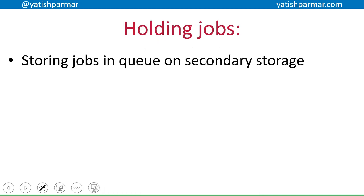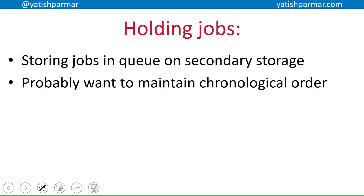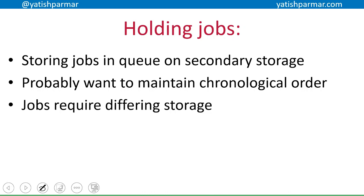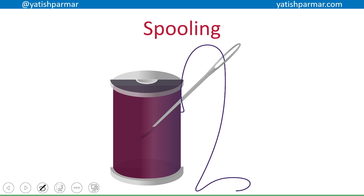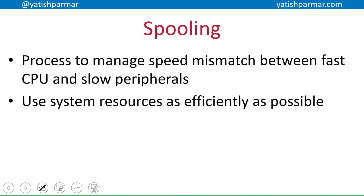All the jobs that can potentially get done but aren't getting done right now are stored in the queue on secondary storage. We want to maintain some kind of chronological order on these jobs — the order in which they arrive and are processed. Because each of these jobs requires different sizes of storage, we're not using an array; we're using a queue because we want to maintain that order.